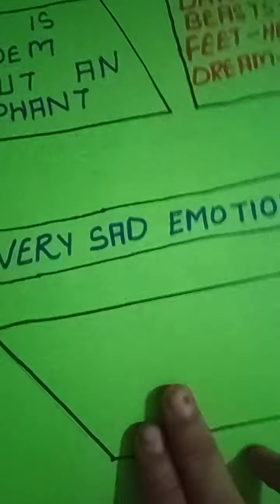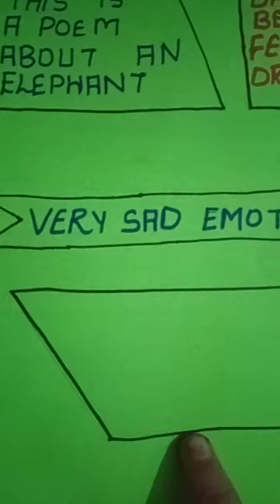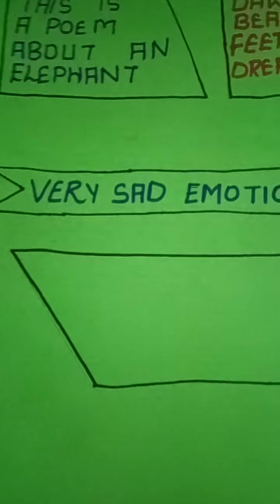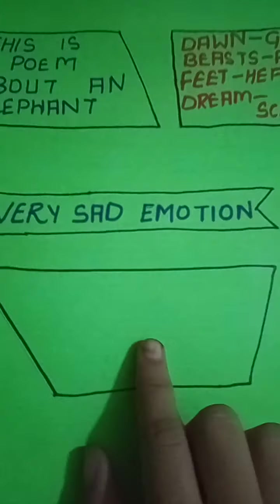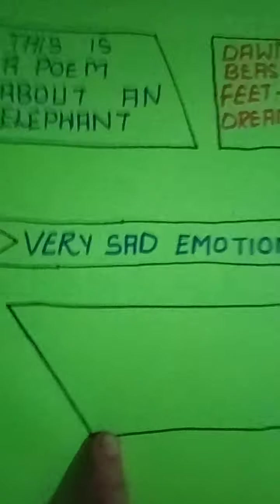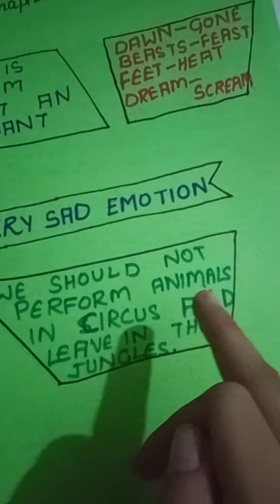Now our fourth shape — what should we add? Think about it. We will add what things we can do for the elephant — where do we want the elephant if not in the circus? So our fourth answer should be: We should not perform animals in the circus and we should keep them in the forest. So friends, I have written: We should not perform animals in the circus and they should live in the jungles.